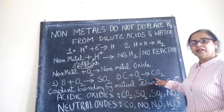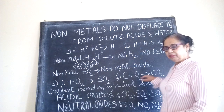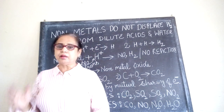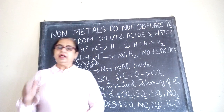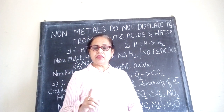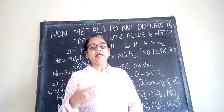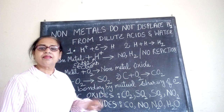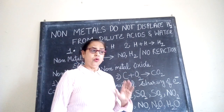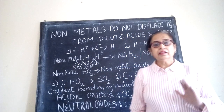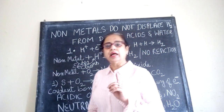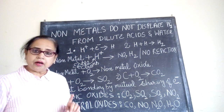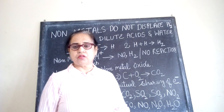The same is the case with carbon dioxide. Water is neutral, and if we are dissolving sulphur dioxide or carbon dioxide in water and that water is changing blue litmus to red, it tells us that the nature of these oxides is acidic. Generally, the non-metal oxides are acidic in nature, but there are some neutral oxides also.